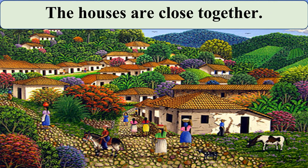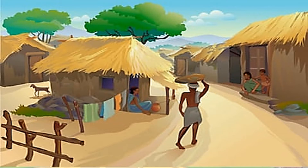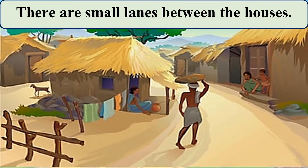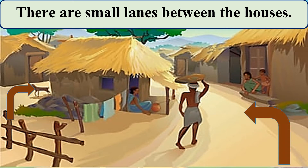The houses are close together. Close together means they are very near to each other. Say with me: The houses are close together. Next: There are small lanes between the houses. Though houses are close together, there are small lanes — gullies between the houses. Listen carefully and say with me: There are small lanes between the houses.